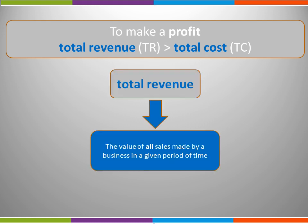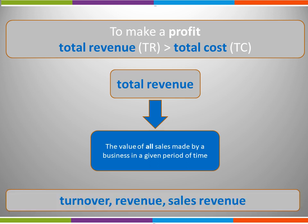Total revenue is the value of all sales made by a business in a given period of time. For example, we may say that a business has total revenue of £1 million made within a 6 month period. Total revenue can also be called turnover, revenue, and sales revenue. These terms all mean the same thing.